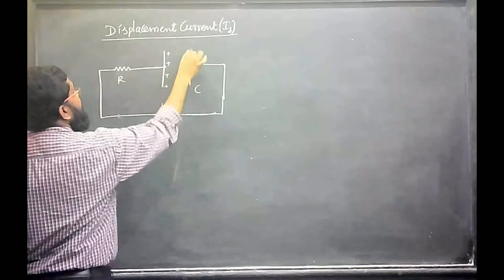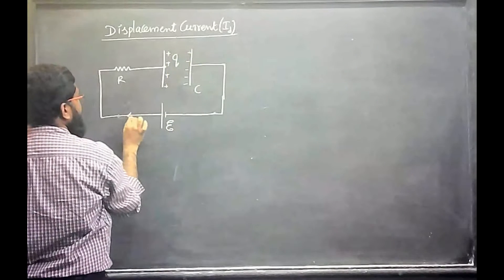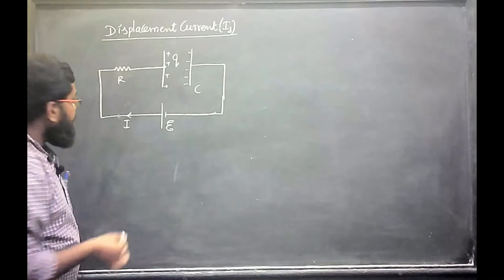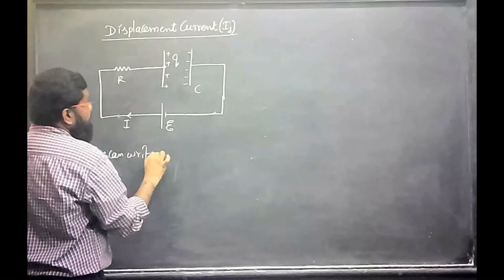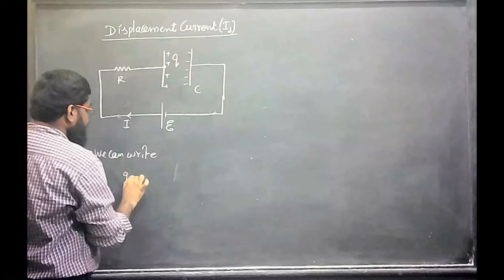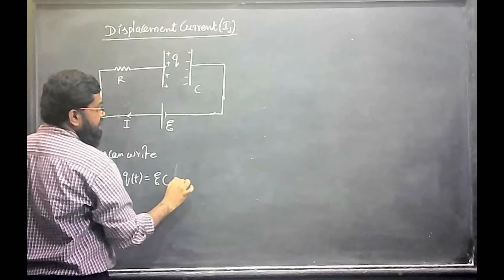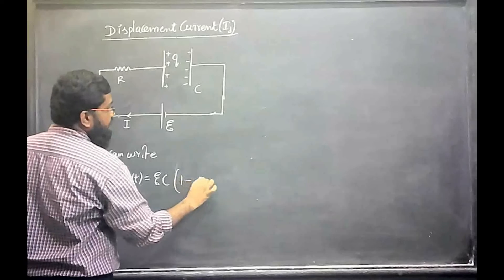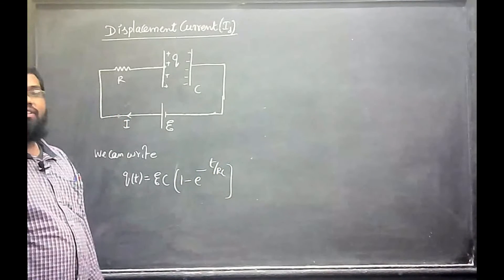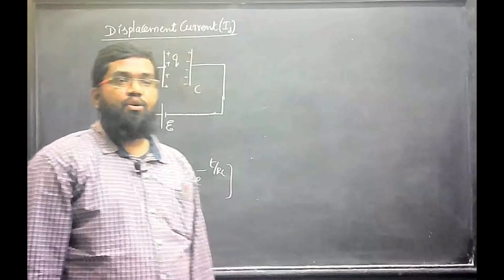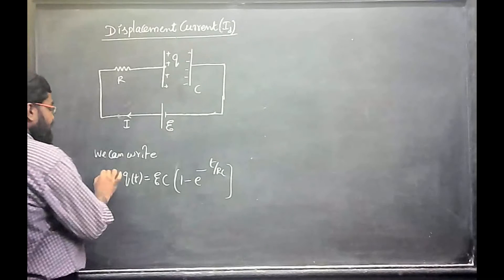At any instant, on the capacitor there is a positive charge and obviously a negative charge. We can write all the equations for the RC circuit. The charge on the plates as a function of time is given by Q = EC(1 - e^(-t/RC)). This is the growth of charge in an RC circuit.